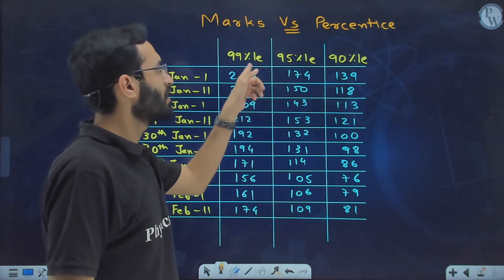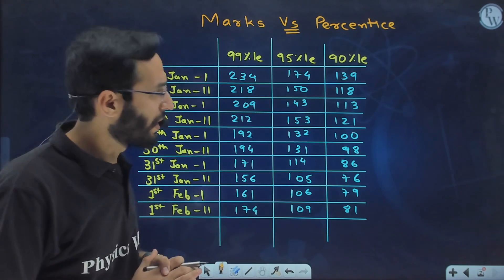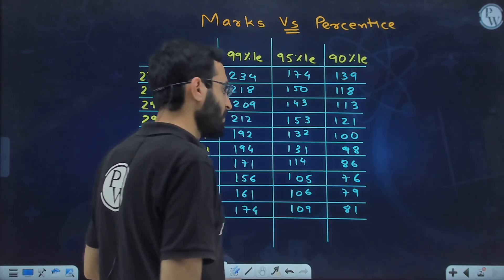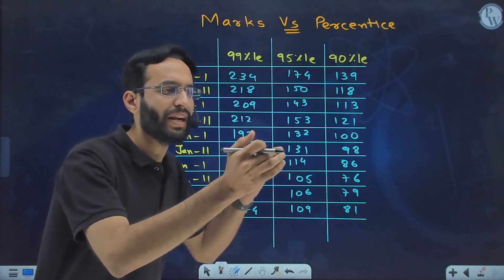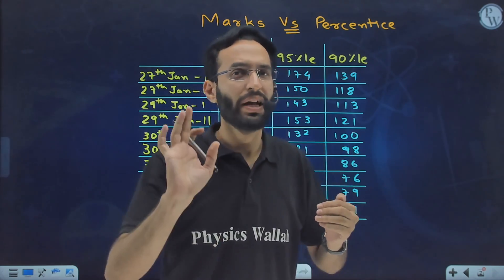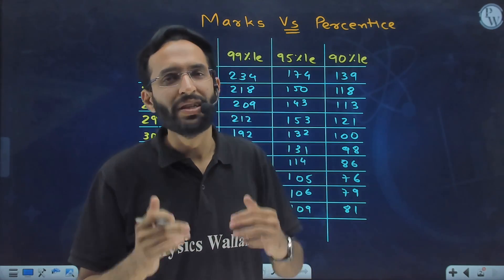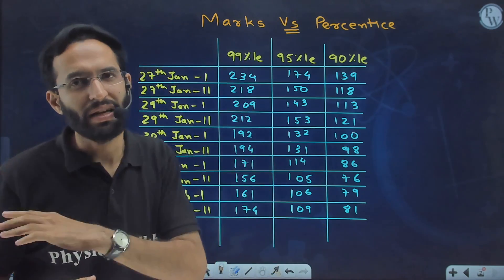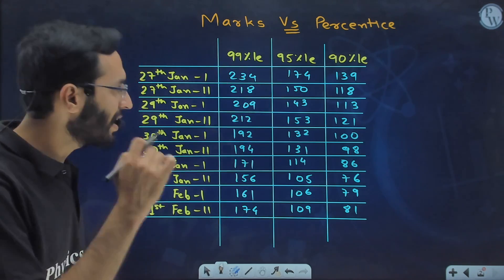For these 10 shifts, I have data for 90, 95, and 99 percentile. Compared to 2022 and 2023, the difference this time is much more. In easier shifts, with more marks you are getting less percentile, and in harder shifts, with fewer marks you are getting higher percentile. The difference between high and low percentile gives us an idea of the difference in difficulty level across papers in physics, chemistry, maths, and overall.